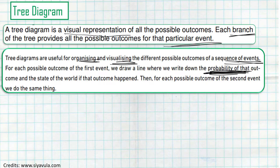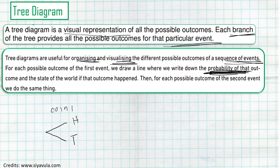Let's say you have two coins and you are tossing them. For coin one, you have two outcomes: either a head or a tail. On top of those branches you must put the probability. The probability of getting a head is one out of two (total sample space), and the probability of a tail is also one out of two.